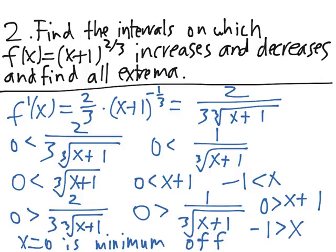So f decreases from -∞ up to -1. Sorry, the minimum is at x = -1, not x = 0. There we go, because the denominator of f' is 0 when x+1 is equal to 0, not when x equals 0. So it increases then from -1 to infinity, and that's what the function is like.